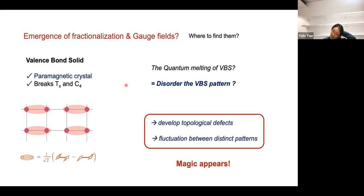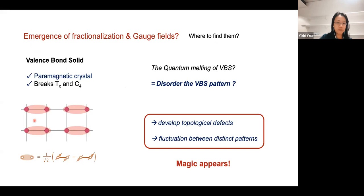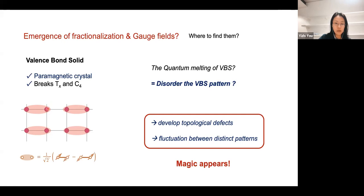Let's first review a concrete example of fractionalization and emergent gauge field in two spatial dimensions. We start with a square lattice with a spin-1/2 degree of freedom per site. A typical paramagnetic ground state for such a spin-1/2 model is the valence bond solid, where two spins on a bond form an SU(2) singlet, so there is a dimer coverage on one of the four links. This VBS is a paramagnetic crystal that does not break spin rotation symmetry, but it does break the crystalline symmetry — translation in one direction and the site-centered C4 rotation symmetry are broken.